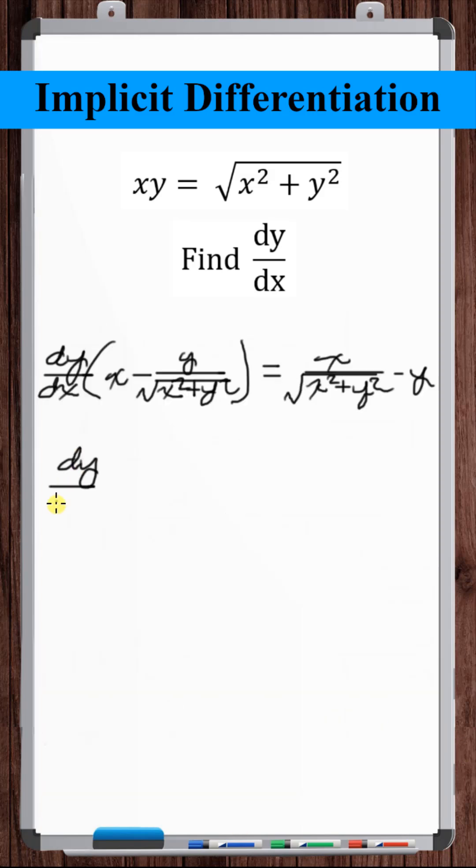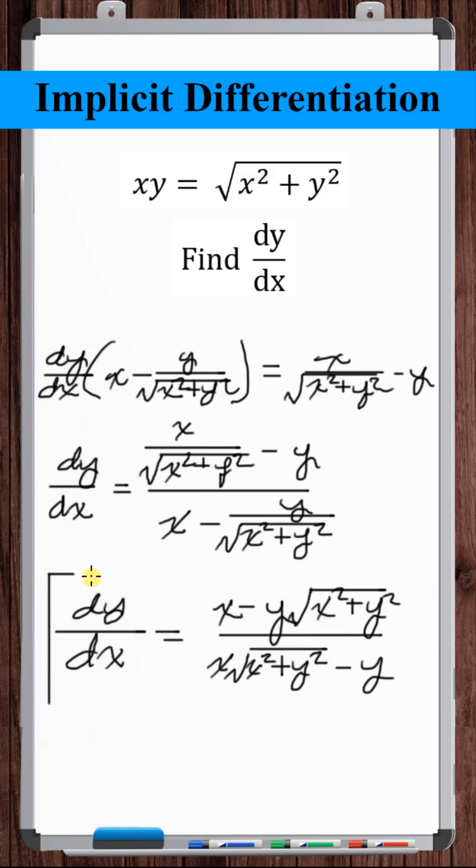Factor out dy/dx on the left. Now divide both sides by this term to find dy/dx. Simplifying further, and that's your answer.